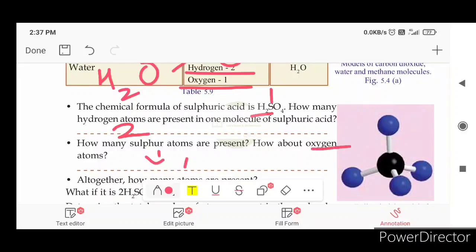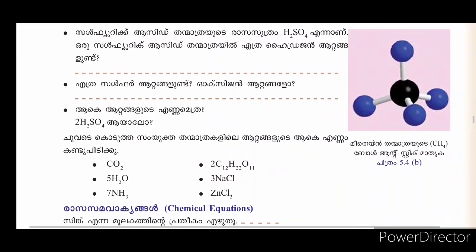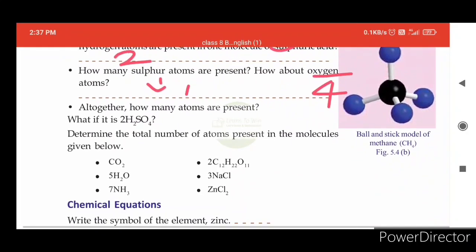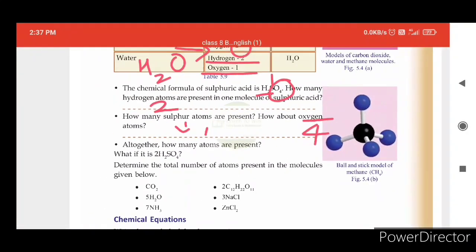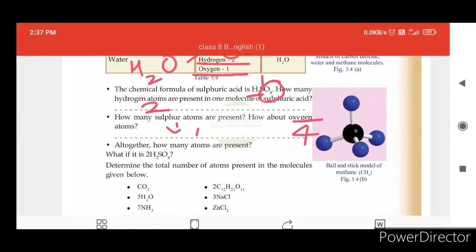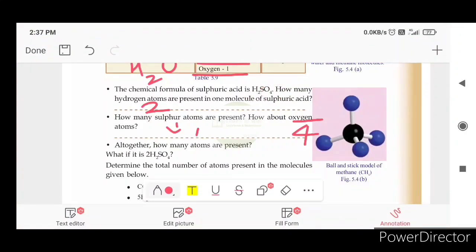How many hydrogen atoms are present in one molecule of sulfuric acid? All together, how many atoms are present? 2 hydrogen.